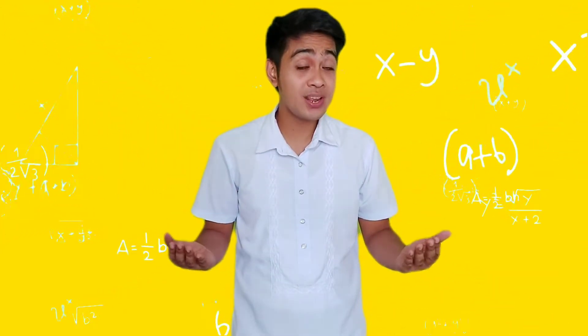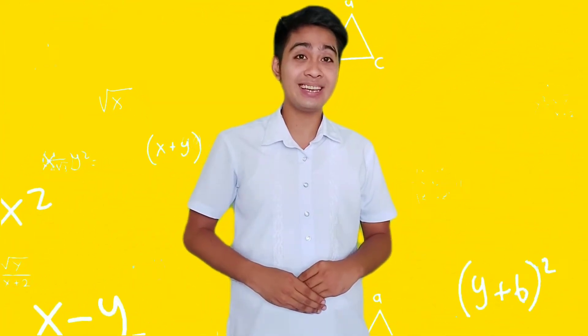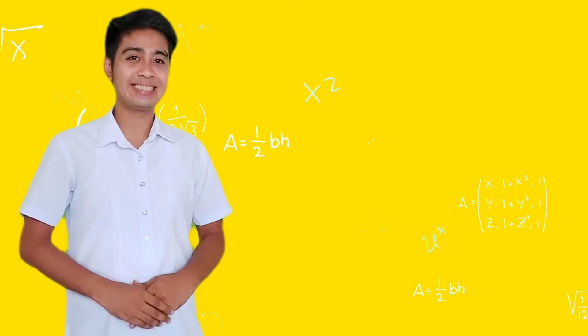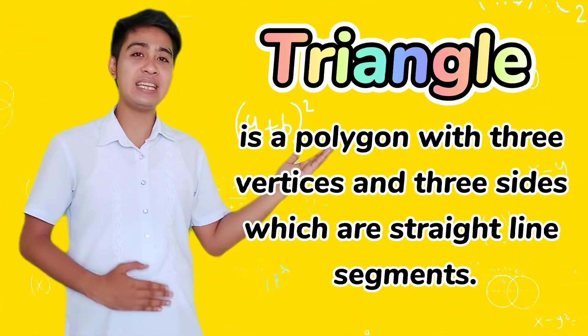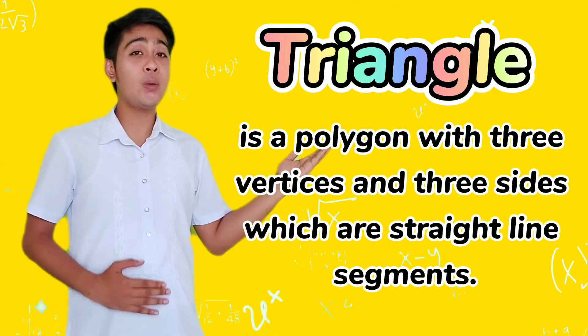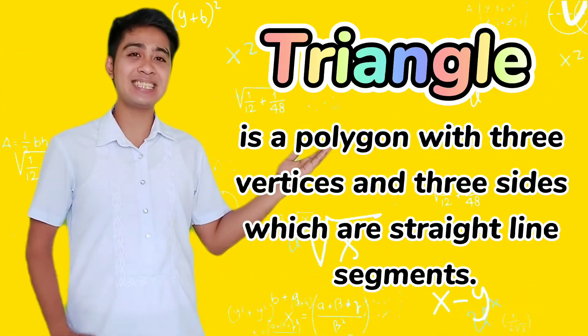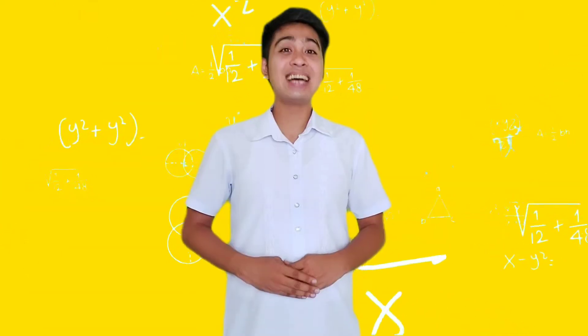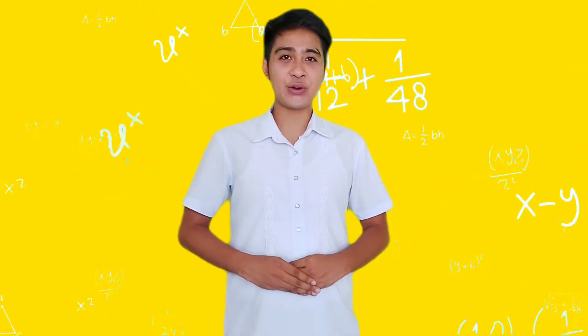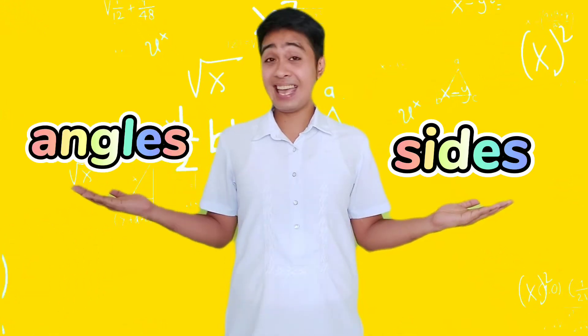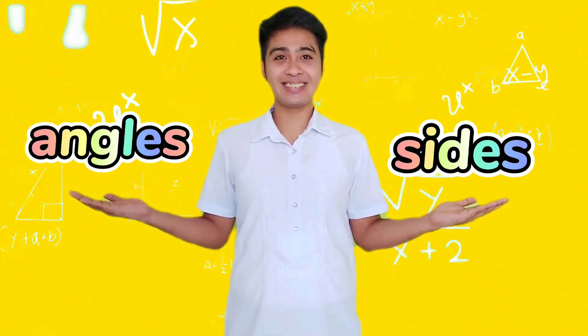Do you know that a triangle is one of the basic shapes of geometry? It is a polygon with three vertices and three sides, which are straight line segments.